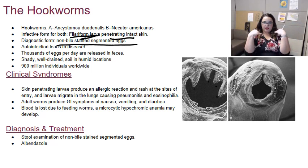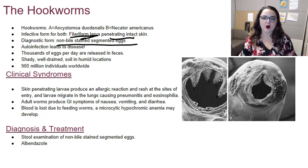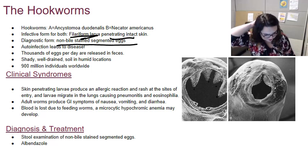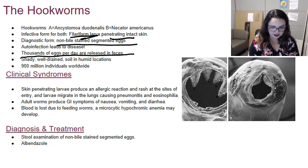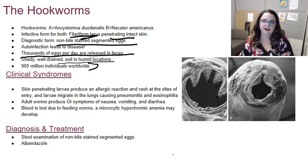Once the worm bites through your intact skin, the larva enters your circulation and is carried up to your lungs. You then cough up the larva and swallow it — this is called auto-infection. It then goes to your small intestine where the adult worm forms. Once that adult forms it can lay thousands of eggs per day, released in feces. These worms are found in shady, well-drained soil in humid locations.